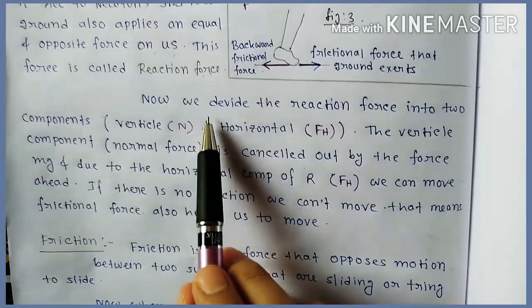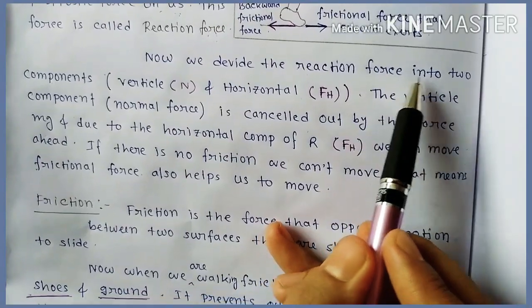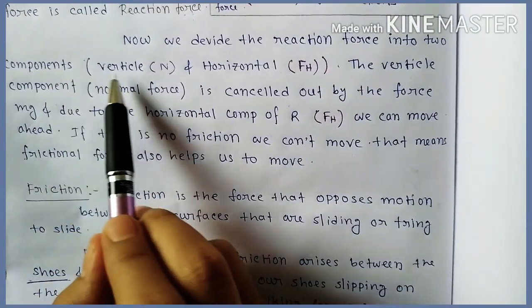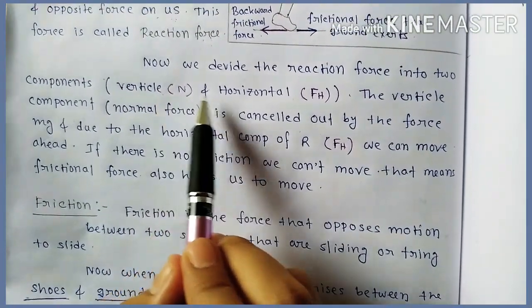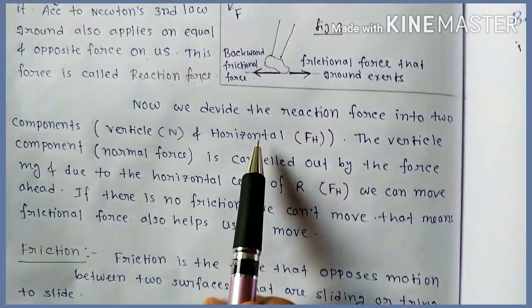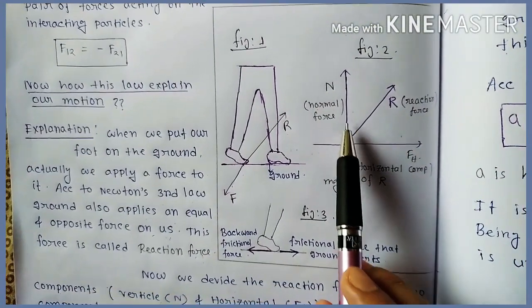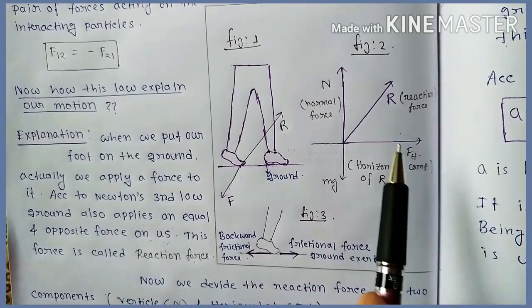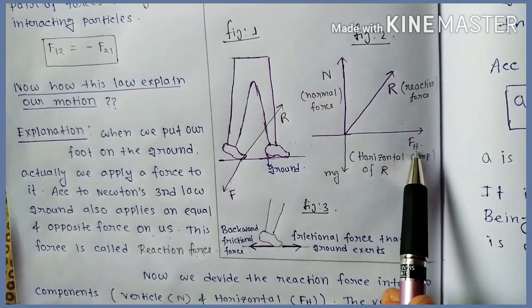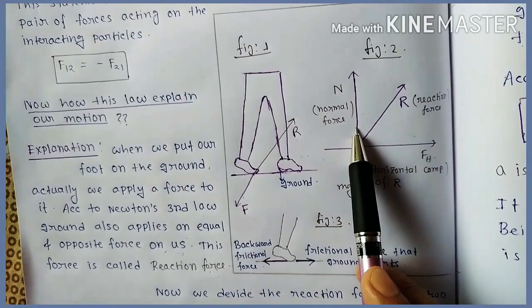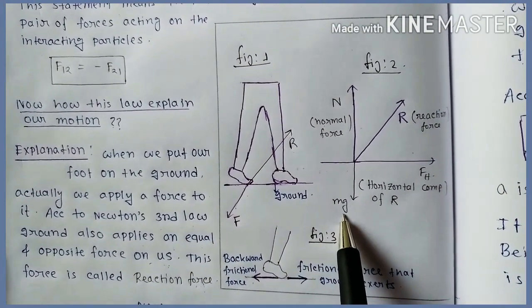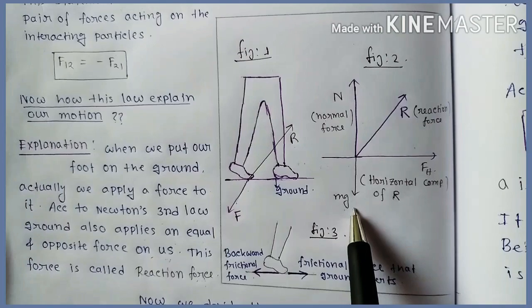Now, we divide the reaction force into two components: vertical and horizontal. In figure 2, the normal component is denoted by N and the horizontal component by FH. The normal component is cancelled out by the force Mg, which is our weight.